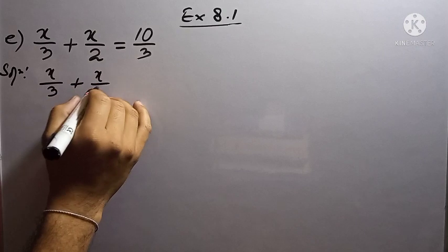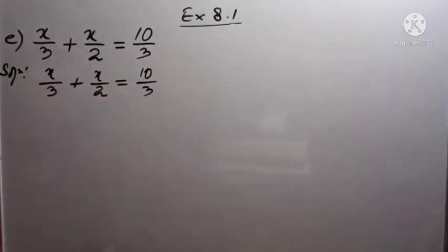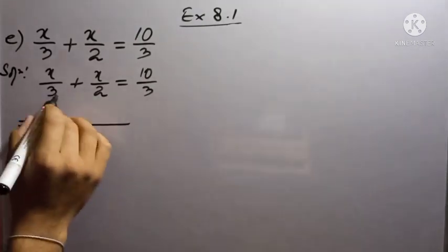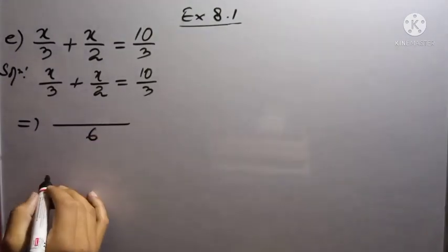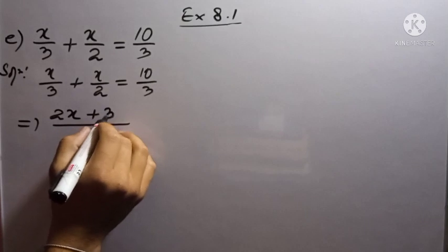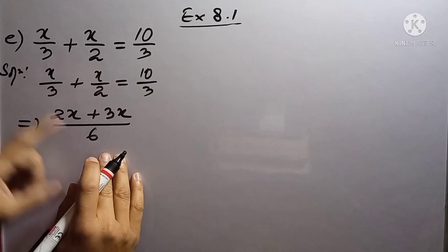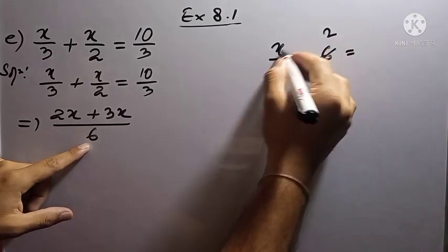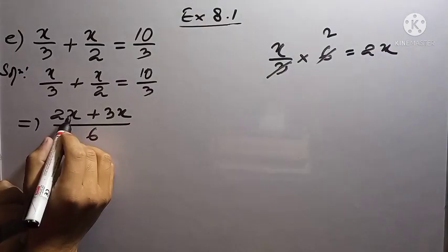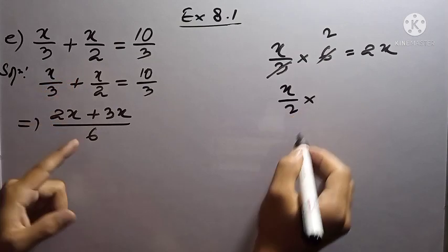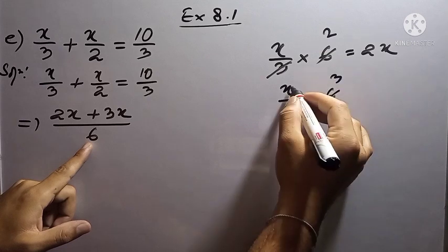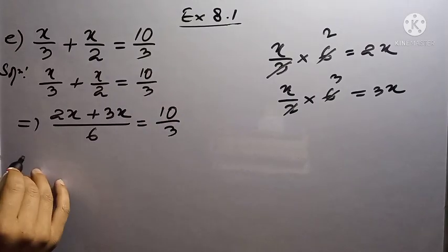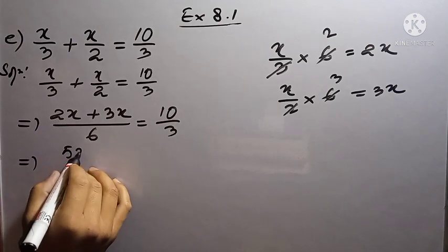Solution: x by 3 plus x by 2 equal to 10 by 3. In both terms on the left hand side we find x. So first let us take the LCM. The LCM of 3 and 2 is 6. Multiplying through by 6: for x by 3, we get 6 divided by 3 equals 2, so x times 2 is 2x. For x by 2, we get 6 divided by 2 equals 3, so x times 3 is 3x. So the left hand side becomes 2x plus 3x over 6, and the right hand side is 10 by 3. Combining: 5x over 6 equal to 10 by 3.